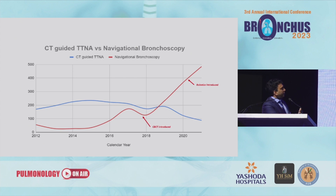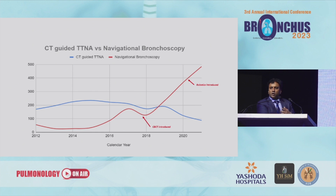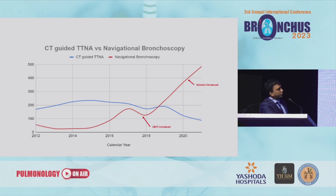Where does this technology start to make a difference? Essentially this is CT guiding into a biopsy — we were doing navigational bronchoscopy. Looking at CPT codes in the United States, we were still in the top five. When we went into the cone beam room, you'll never see anything like this in medicine — a straight line. We introduced robotics and were able to do additional cases. It just took us two years to convince interventional radiology that cone beam was the way to go.